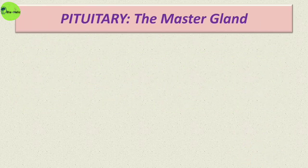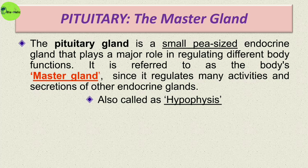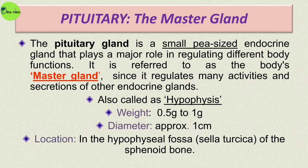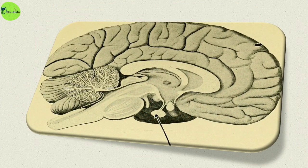First of all, I should introduce you to the master gland — that is the pituitary gland. The pituitary gland is a small, pea-sized endocrine gland that plays a major role in regulating different body functions. It is referred to as the body's master gland because it regulates many activities and secretions of other endocrine glands. The pituitary gland is also called the hypophysis. Its weight is about 0.5 to 1 gram, its diameter is approximately 1 centimeter, and it is located in the hypophysial fossa — the sella turcica of the sphenoid bone. In this picture we can see the exact location of the pituitary gland.